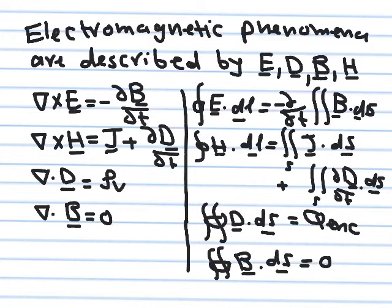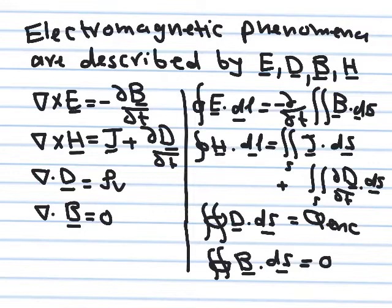All electromagnetic phenomena are governed by Maxwell's equations. Here they are in differential form, and here in integral form. We need four quantities to express Maxwell's equations: E, D, B, and H. When we had static charges we talked about E and D; with steady currents we talked about B and H. In the static case these two sets of fields can exist independently of one another.